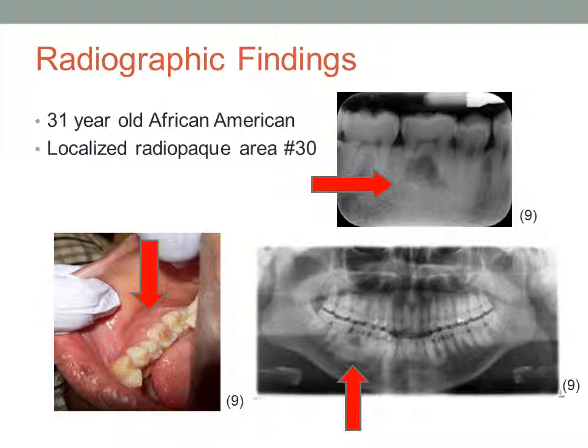A thinning of the inferior border of the mandible may also be seen, and in periapical radiographs, a thickening of the lamina dura, loss of bone height, and a coarse trabecular pattern with increased medullary spaces may also be seen.